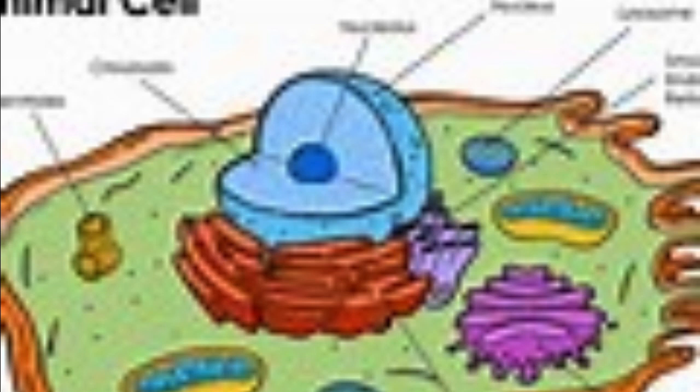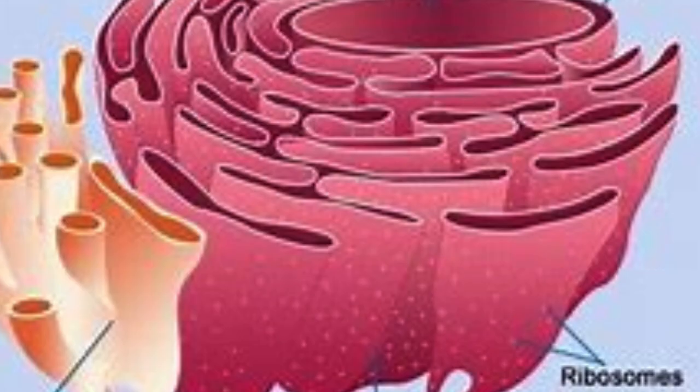This is an animal eukaryotic cell. In this video I will tell you the structure and functions of endoplasmic reticulum. Endo means inside and reticulum means a network. Just have a look at this diagram — it looks like tubules which are interconnected to each other and form a network. This is the endoplasmic reticulum.